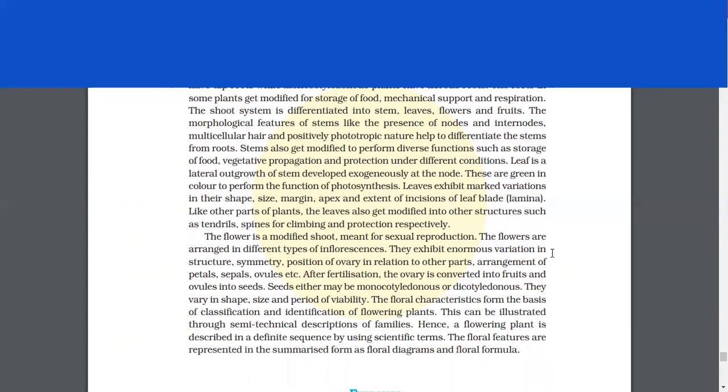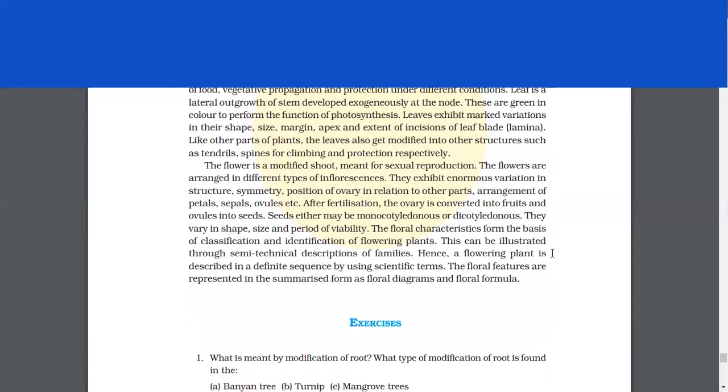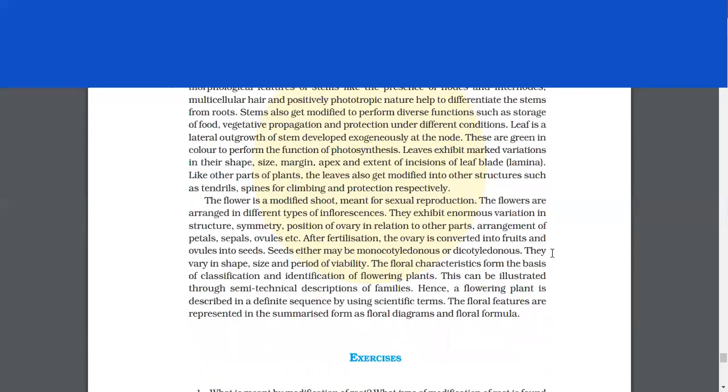The shoot system is differentiated into stem, leaves, flowers and fruits. The morphological features of stems like the presence of nodes and internodes, multicellular hair and positively phototropic nature help to differentiate the stems from roots. Stems also get modified to perform diverse functions such as storage of food, vegetative propagation and protection under different conditions. Leaf is a lateral outgrowth of stem developed exogenously at the node. These are green in color to perform the function of photosynthesis. Leaves exhibit marked variations in their shape, size, margin, apex and extent of incisions of leaf lamina. Like other parts of plants, the leaves also get modified into other structures such as tendrils, spines for climbing and protection respectively.